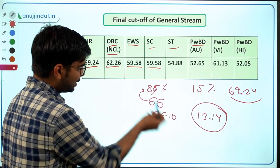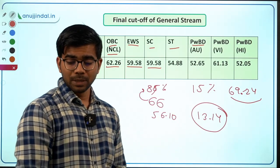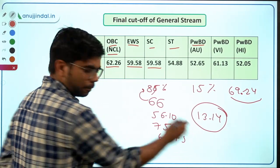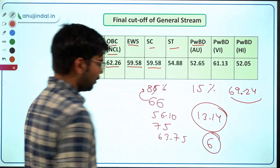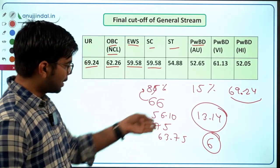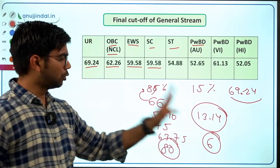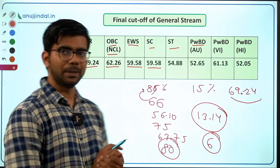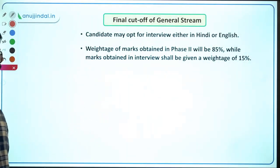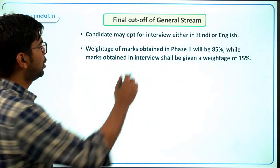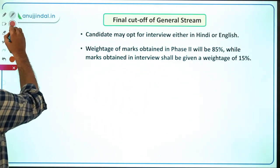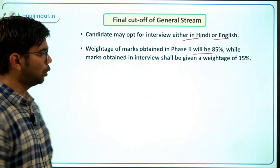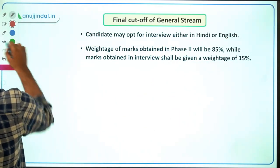So phase 2 mein achhi preparation karni hai. If you score 75 or 80 in Phase 2, you only need about 5-6 marks in the interview. The interview can be given in Hindi or English — you have the option. Interview performance depends on knowledge and confidence, but there is also a luck factor depending on the panel. Phase 2 mein achi number aane se aap interview ke marks compensate kar paoge. 85% weightage is for Phase 2 and 15% for the interview.